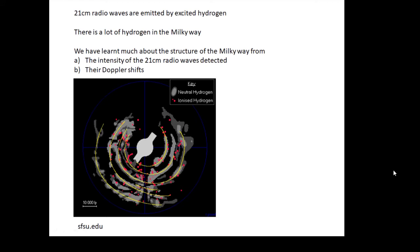How do we know about the structure of the Milky Way? We got a lot of information from 21 centimeter radio waves emitted by hydrogen—there's a lot of hydrogen out there. By detecting these radio waves, their intensity, and where they're coming from, we can work out how much hydrogen there is and how far away. From their Doppler shift, we know if they're moving towards or away from us. We've figured out the structure of the Milky Way using these 21 centimeter radio waves.